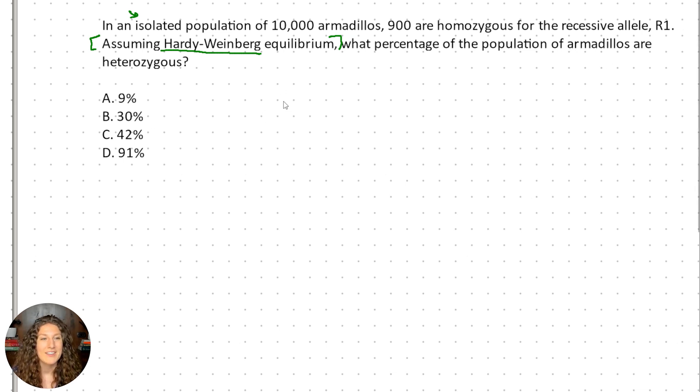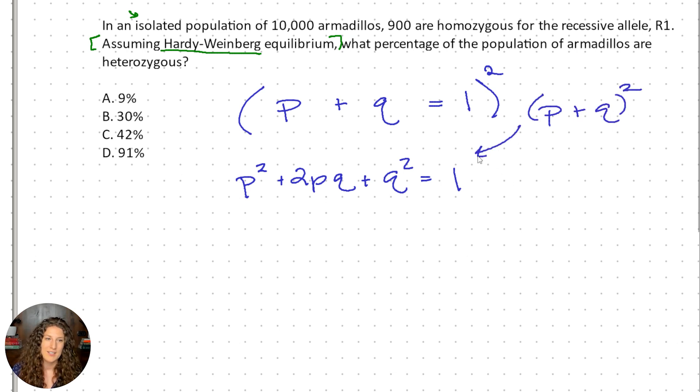There are two equations for Hardy-Weinberg. The first is p plus q equals 1 and the second is p squared plus 2pq plus q squared equals 1. Now if you recall your algebra, you may notice that this second equation is just taking this first equation and squaring it, because p plus q squared is p squared plus 2pq plus q squared equals 1 because 1 squared is still just 1. So we're just taking this first equation and squaring it to give us a little bit more information.